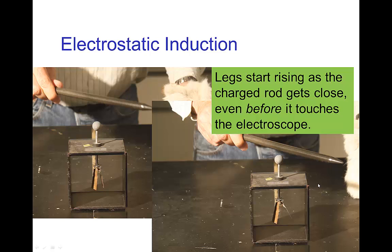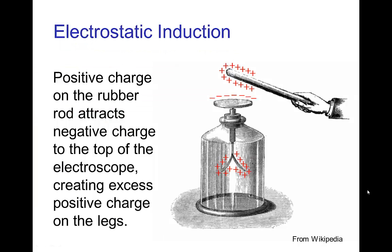But why do the legs actually start to separate even before the rod touches the electroscope? What is happening here is electrostatic induction. In this diagram, if we have a rod that is positively charged, then the negative electrons in the electroscope are drawn to the top because opposite charges attract. Those electrons are stripped out of the atoms in the rest of the electroscope, leaving the bottom part positively charged. So the legs will separate just by the induction of drawing negative charges to the top and leaving positive charges on the bottom.